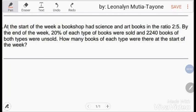Let's answer this question together. At the start of the week, a bookshop had science and art books in the ratio of 2 is to 5. By the end of the week, 20% of each type of books were sold, and 2,240 books of both types were unsold. How many books of each type were there at the start of the week?